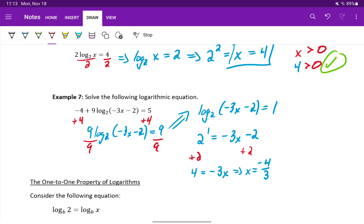Even though that result is negative, that doesn't mean it's not a valid solution because what we need is that expression inside the original logarithm, negative three x minus two, to be greater than zero. Which means we need negative three times negative four thirds minus two to be greater than zero. Negative three times negative four thirds will end up being positive four minus two, or two, which is greater than zero.